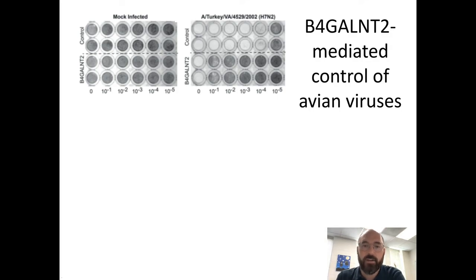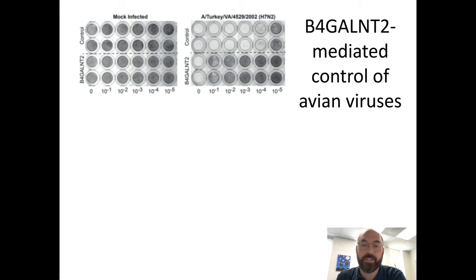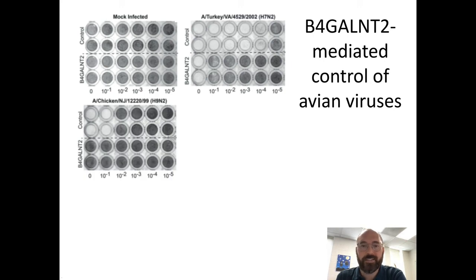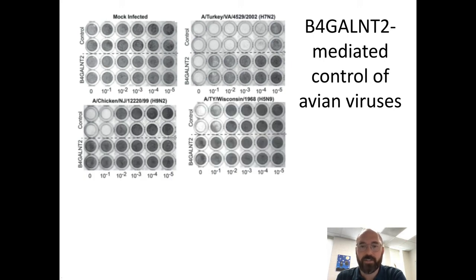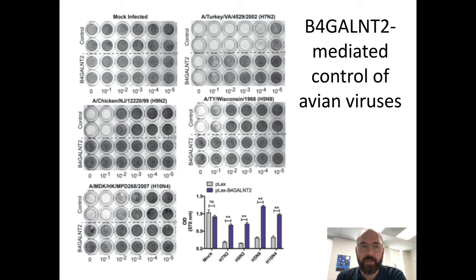We decided to test that. Using a crystal violet staining assay — where we apply virus at different dilutions and clear wells indicate cell killing — we show that for H7N2 avian virus, control cells are killed much more than B4GALNT2-overexpressing cells. That trend holds true for H9N2, H5N9, and H10N4 viruses. Basically any avian virus we put on B4GALNT2-expressing cells is strongly restricted.